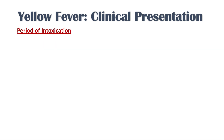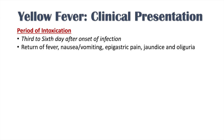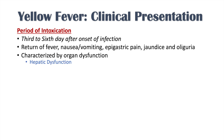The third stage is the period of intoxication, occurring during the third to sixth day after onset of symptoms. There's a return of fever, nausea, vomiting, and epigastric pain. You also get jaundice and oliguria — decreased urine output — as well as organ dysfunction such as hepatic dysfunction. The AST generally exceeds the ALT in the hepatic dysfunction of yellow fever, and this is why we see jaundice. Oliguria can progress to complete anuria, indicating renal failure.